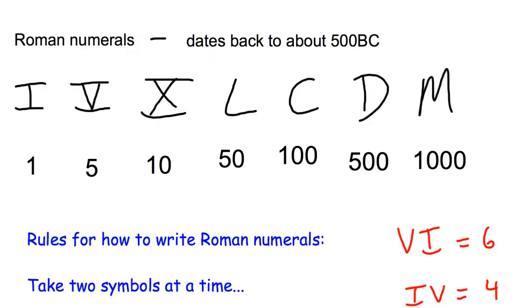So here are the Roman numerals: I, V, X, L, C, D, and M, with the values of those symbols underneath. One is I, five is V, ten is X, fifty is L, one hundred is C, five hundred is D, and one thousand is M.